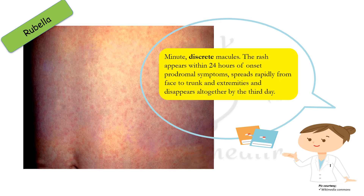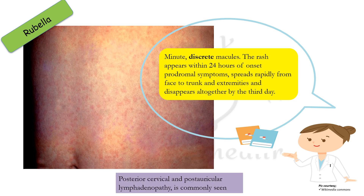The rash of rubella is minute and discrete — in comparison, measles rash is confluent while rubella rash is discrete, meaning lesions can be demarcated separately. The rash appears within 24 hours of prodromal symptoms, spreads rapidly from the face to trunk and extremities, and disappears altogether by the third day, unlike measles which takes 7 to 10 days. Posterior cervical and post-auricular lymphadenopathy is very commonly seen in rubella.